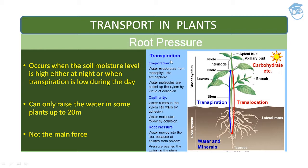Now, transpiration and evaporation: water evaporates from mesophyll into the atmosphere and water molecules are pulled up the xylem by virtue of cohesion. Then comes capillarity — water climbs in the xylem cell wall by adhesion. Cohesion is the mutual attraction between water molecules, whereas adhesion is the attraction of water molecules to a polar surface such as the surface of tracheary elements. Root pressure also plays a role: water moves into the root because of solutes from the phloem and pressure just pushes the water up the stem.